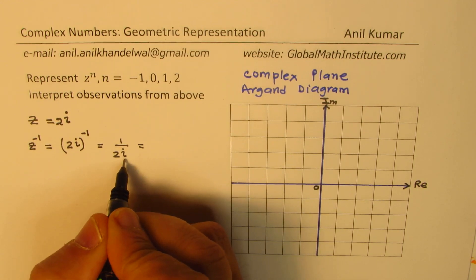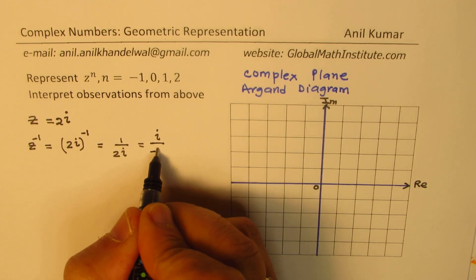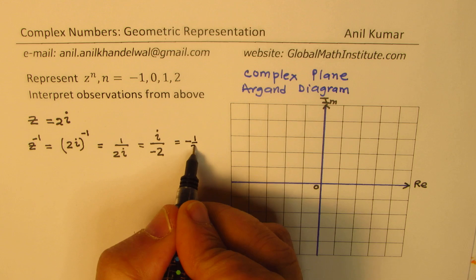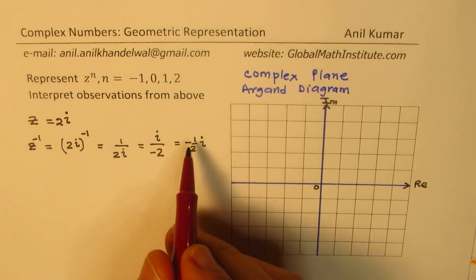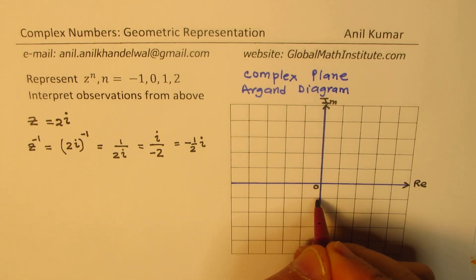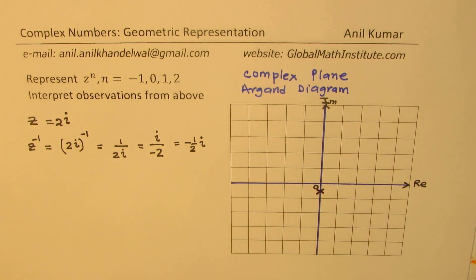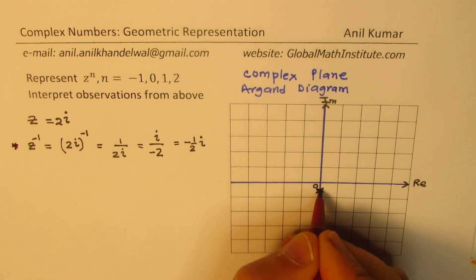Now we can multiply and divide by i. So if we do that, we get i over minus 2i squared, which is negative one-half i. So z to the power of minus 1 can be represented by the point minus one-half i. Since this is one unit, minus one-half i will be the point right there. That becomes the first point, which is minus one-half i.